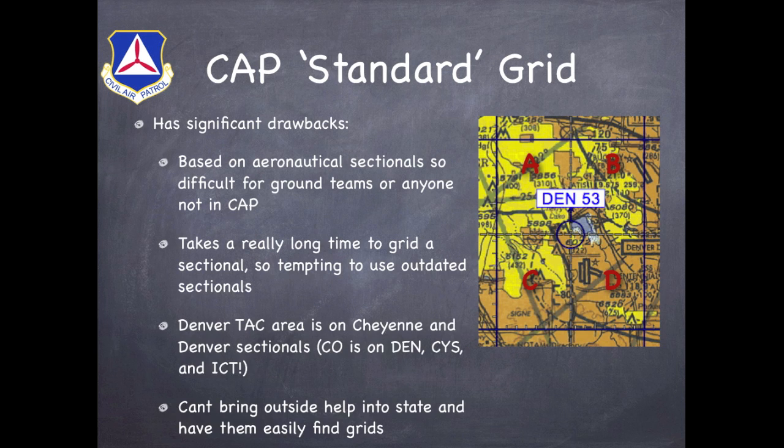What we're looking at on the right is a blown-up area of the Denver sectional, and that's Centennial Airport in the lower right. So for example, if we were looking to fly a standard grid over the airport, we would be looking at Denver 53 Delta. Again, that's a 7.5 by 7.5-minute grid.